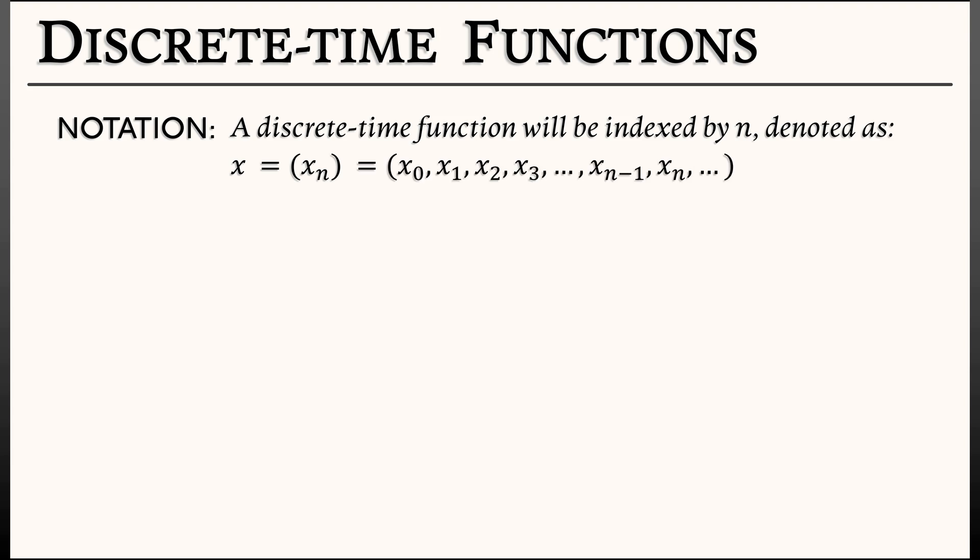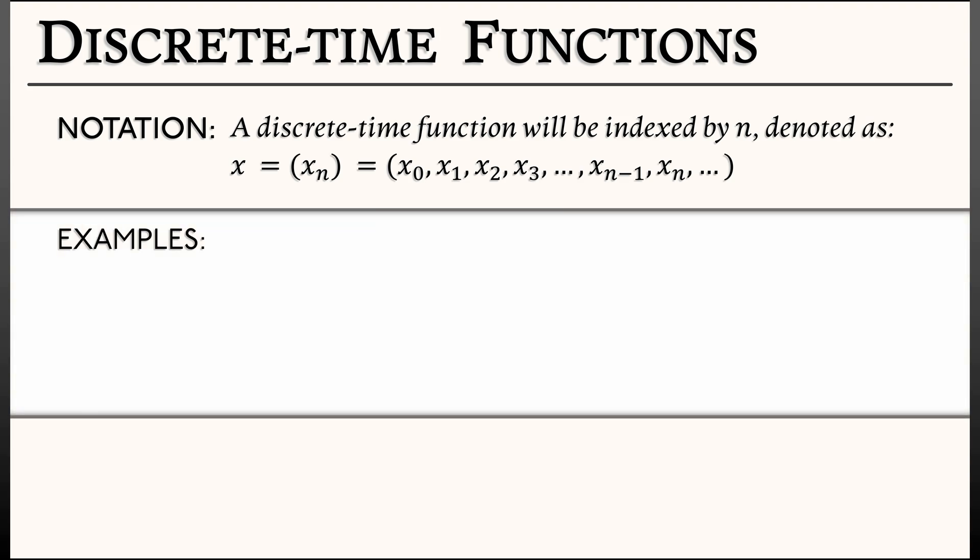For example, consider the function n-squared. This would be the discrete-time analog of t-squared. The values of this function would be 0-squared, 1-squared, 2-squared, 3-squared, etc. This would look like a quadratic function. And one could write down lots of other polynomial functions as well.